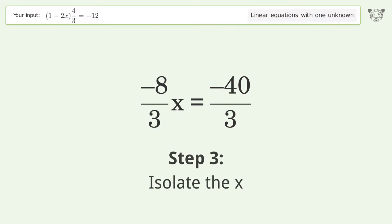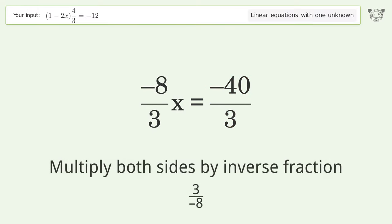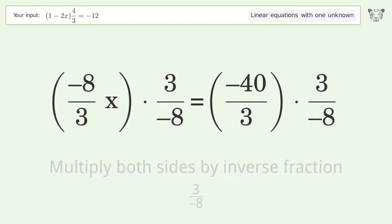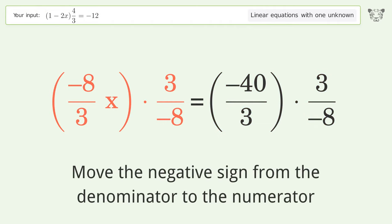Isolate the x. Multiply both sides by inverse fraction 3 over negative 8. Move the negative sign from the denominator to the numerator.